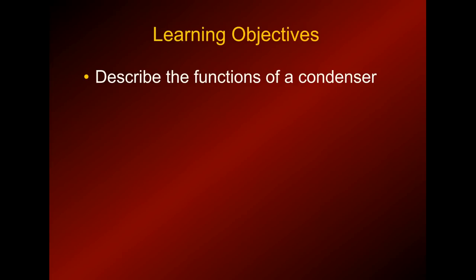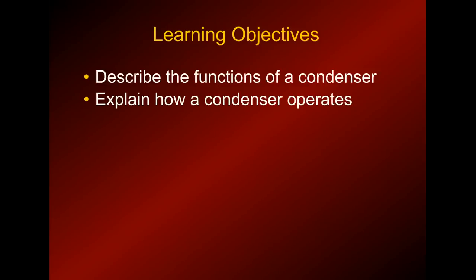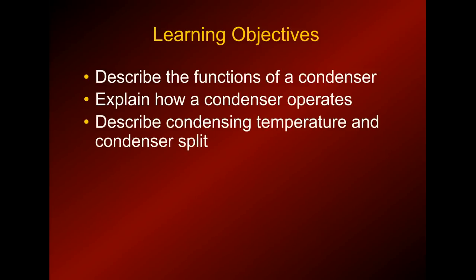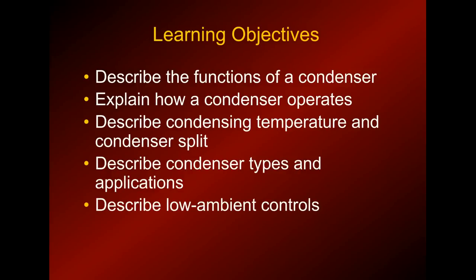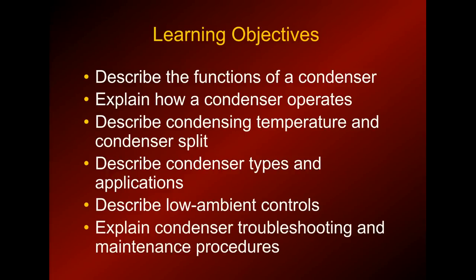So we'll take a look and describe the functions of a condenser. We'll explain how a condenser operates. We'll describe condensing temperature and condenser split, which is similar to the TD measurement that we do on evaporators. We'll talk about air-cooled and water-cooled condensers, and then we'll take a look at low ambient controls — how they operate and why they're necessary for refrigeration. And then we'll go over condenser troubleshooting and maintenance procedures. We'll get into the full refrigeration circuit troubleshooting in a later lesson.